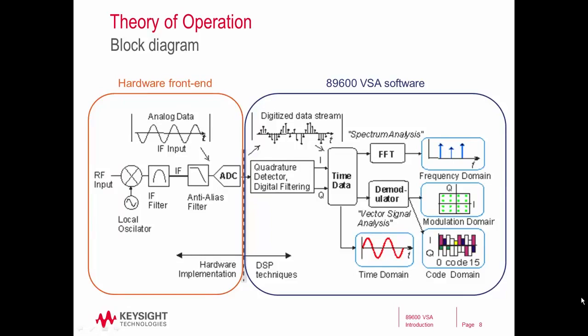Here in this diagram, we can see how the hardware front end and the 89600 VSA software are working together. In the orange rectangle on the left, we have our representation of the acquisition being made by the hardware, which is then passed to the 89600 VSA software. All of the operations being done in the software are contained within the blue rectangle on the right. The VSA software gets the time domain data from the hardware front end, then performs the FFT, demodulation, and various transforms to provide different data formats, displaying results in the frequency domain, modulation domain, code domain, and time domain.